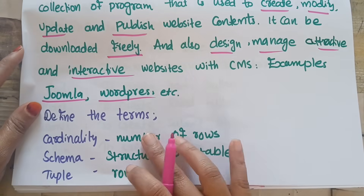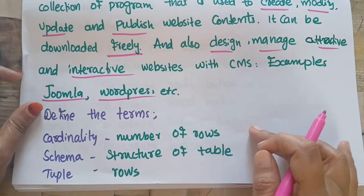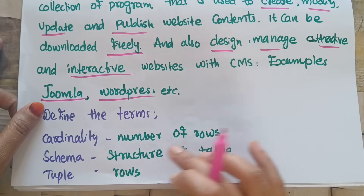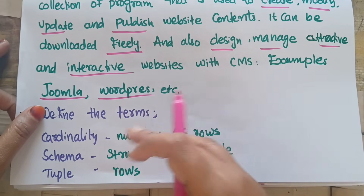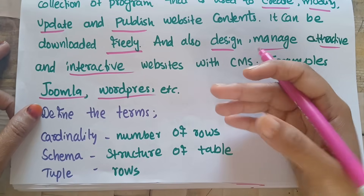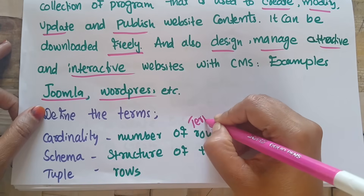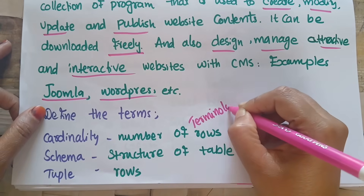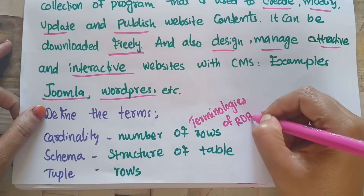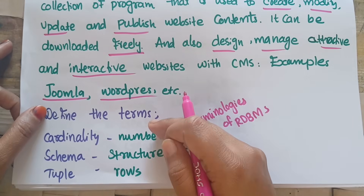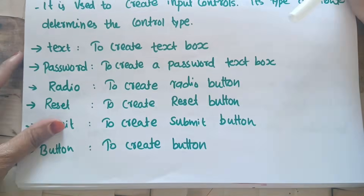Next are RDBMS terminologies: cardinality, schema, tuples, and attributes. Cardinality refers to the number of rows. Schema refers to the structure of rows. Attribute refers to the number of columns or fields. These are the key terminologies of RDBMS to learn.